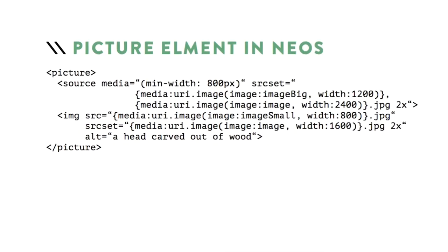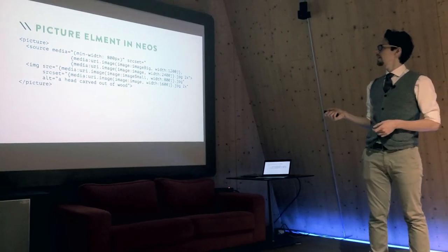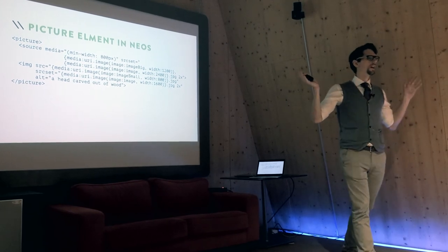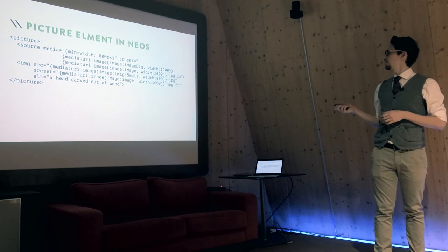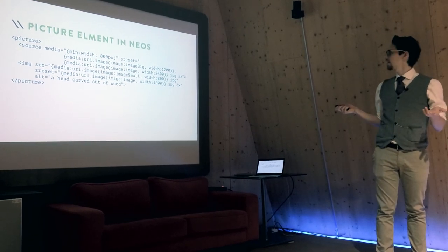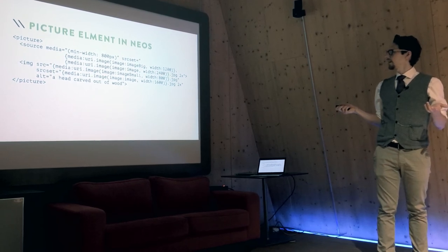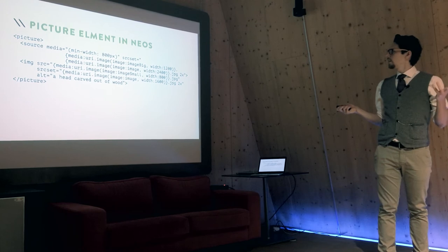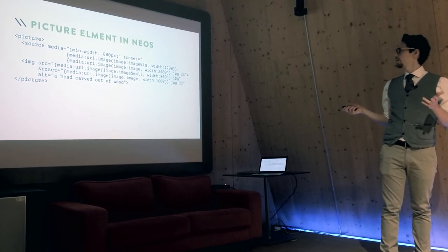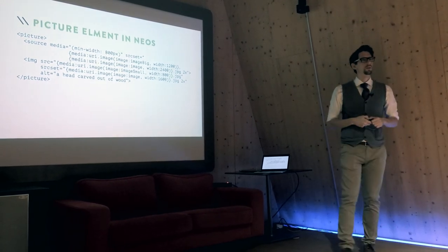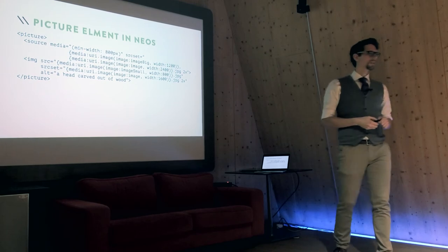One solution to do that in EOS would look something like this. I have two configurations: one called image_big and one called image_small. In the backend you can choose different images for those. Then using the image jury you downsize it — for my normal 800+ layout the picture is 1200 pixels, and for retina double that size. For mobile I have an 800 pixel picture and for retina double that. That's the whole art direction logic in EOS.